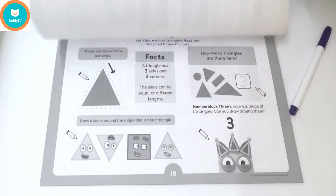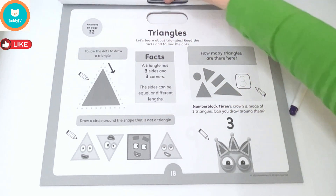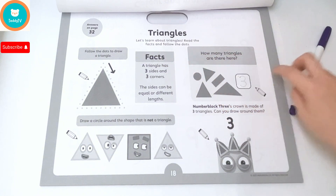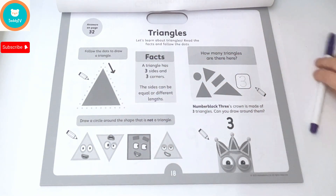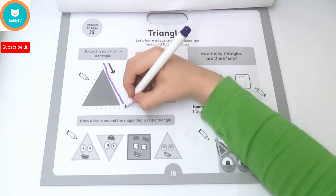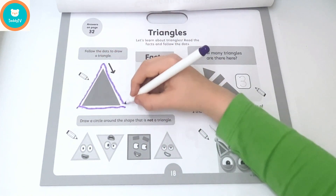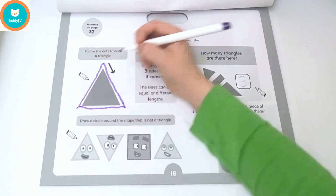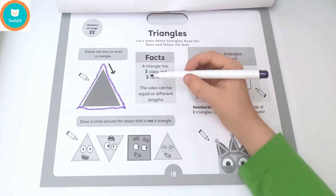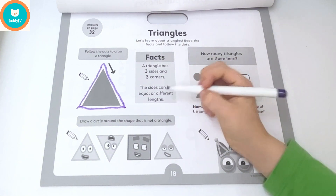Time to turn the page — triangles! Let's learn about triangles. Read the facts and follow the dots. Follow the dots to draw a triangle: one, two and three. Facts: a triangle has three sides and three corners. The sides can be equal or different lengths.